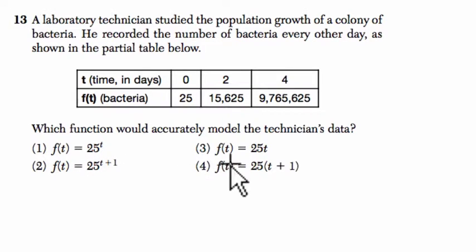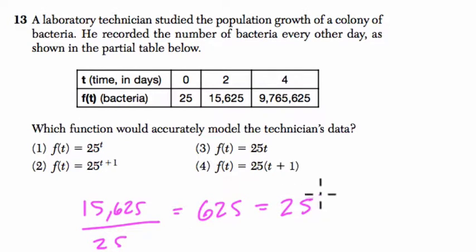Notice in each of these equations you see the number 25. So the first thing we're going to try and do is figure out, does that help us understand what's happening here? Because what I notice is that if you take 15,625 and divide it by 25, what do you get? Well, you get 625. And I'm thinking, does that relate to 25? Yes, that equals 25 squared.